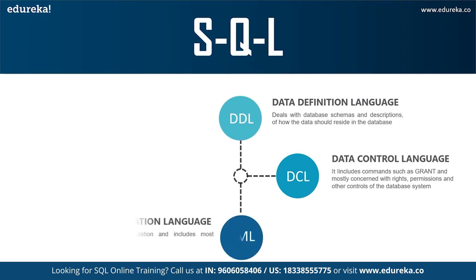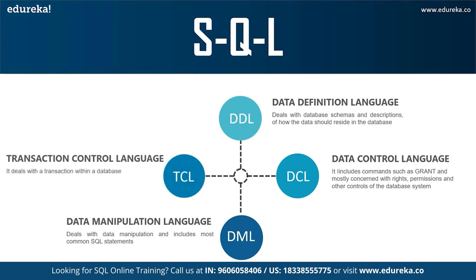The next command is DML, that is Data Manipulation Language. It allows you to access and manipulate data — insert, update, delete, and retrieve data from the database. The INSERT command is used to insert data into a table, UPDATE is used to update existing data within the table, and DELETE is used to delete records from the database. The final command is TCL, that is Transaction Control Language, which allows you to deal with the transactions of the database. TCL commands include COMMIT, ROLLBACK, SAVEPOINT, and SET TRANSACTION.